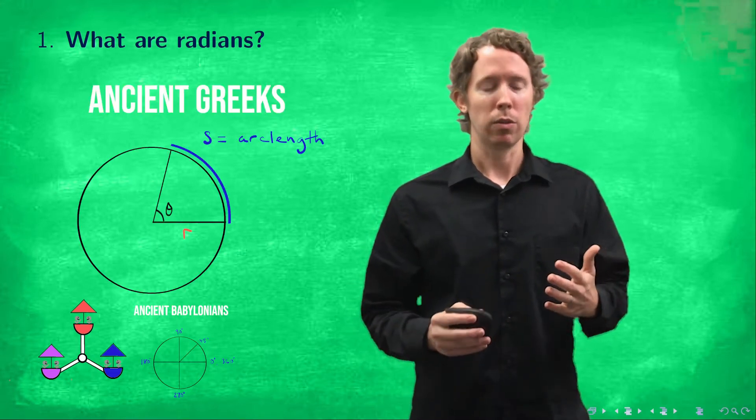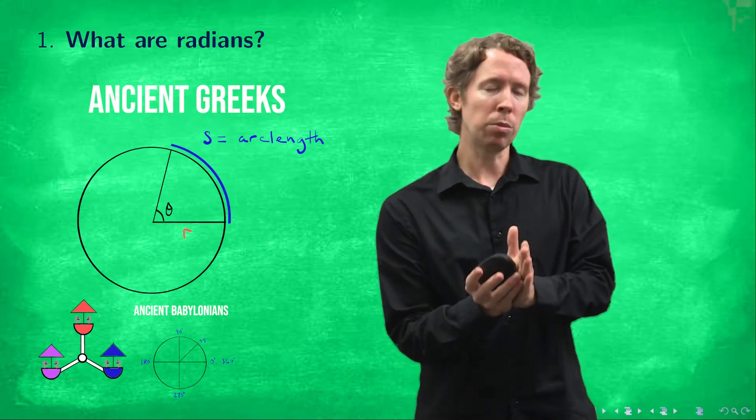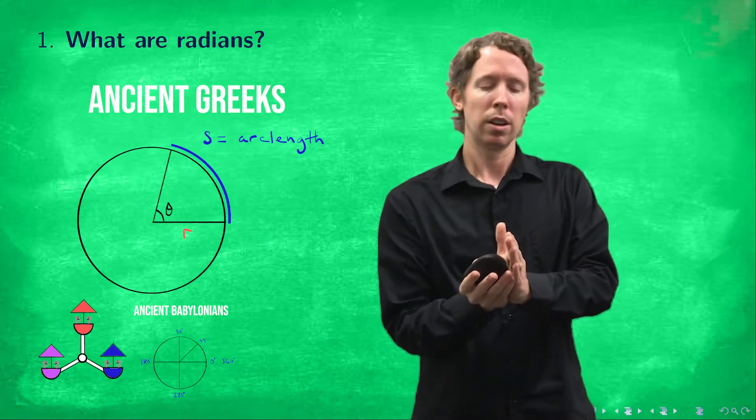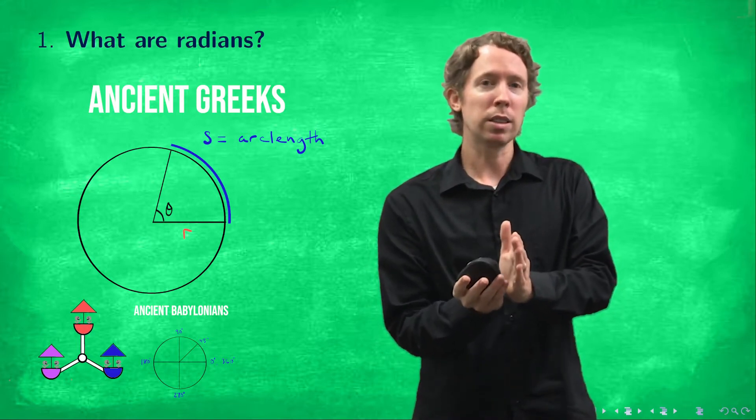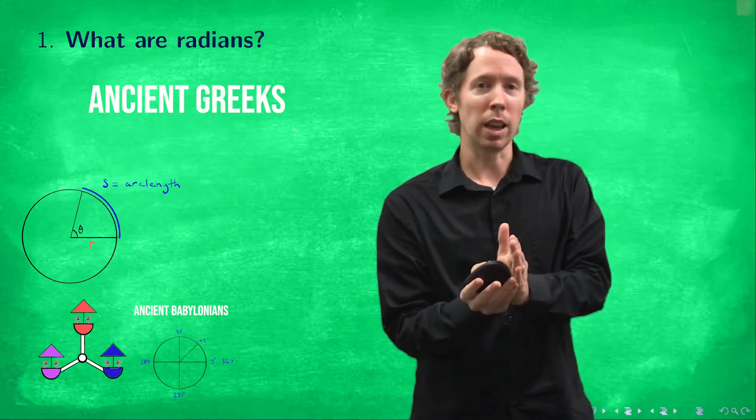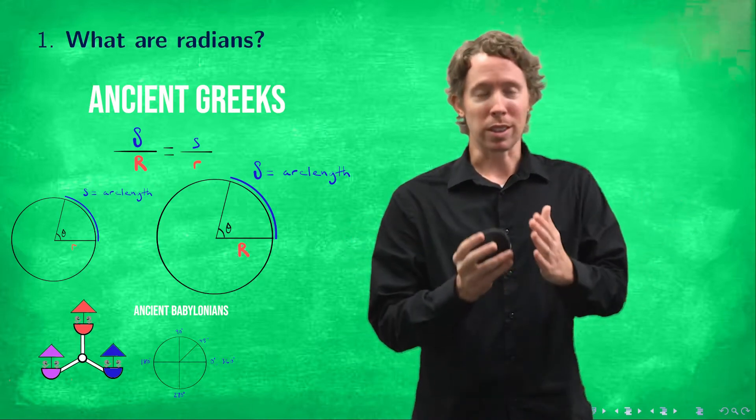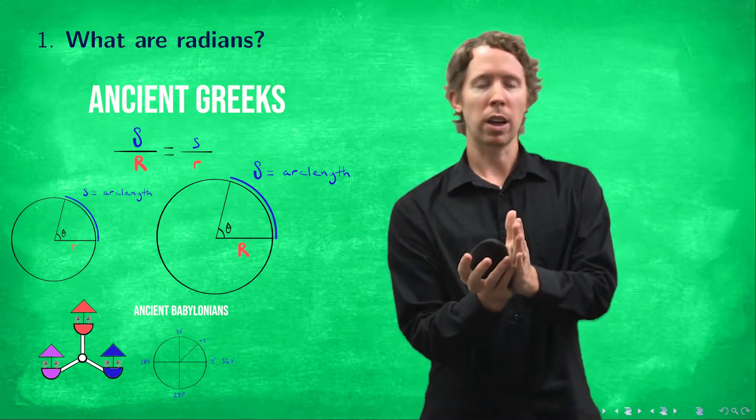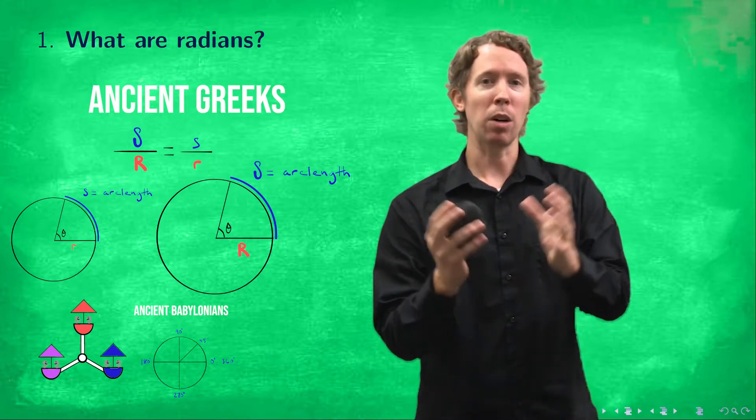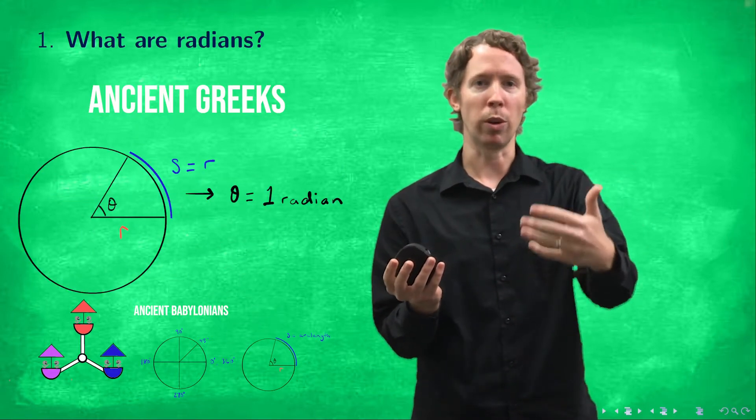So they figured out that if you take an angle in the center of a circle and you measure the length it cuts out on the edge of a circle, so the arc length that it cuts out, the number of radiuses or radii inside of that arc length will always be the same no matter how big your circle is. So the same angle will always cut out a length along the edge of one radius no matter how big the circle is. And the Greeks called that particular angle one radian.